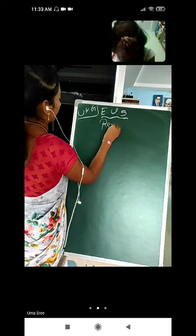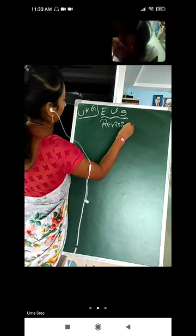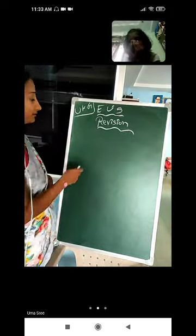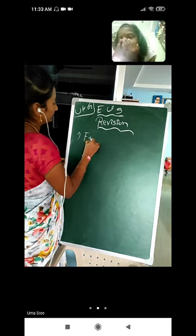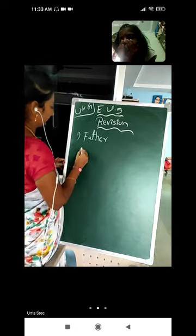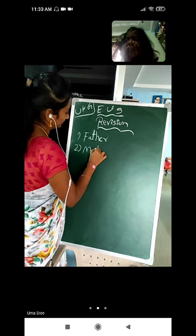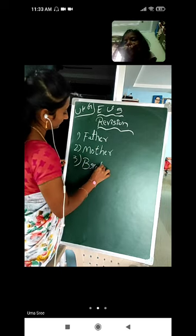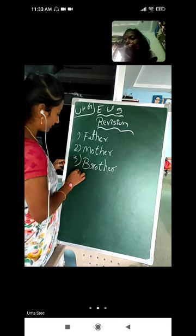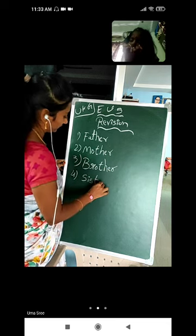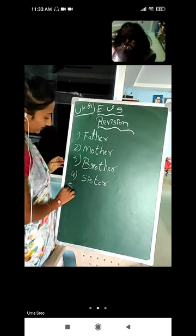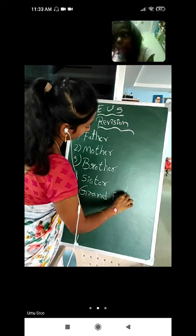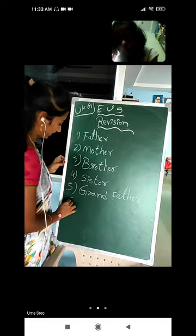Revision, kids. First of all, my family means: first is father, second one is mother, third one is brother, fourth one is sister, fifth one is grandfather, and sixth one is grandmother.